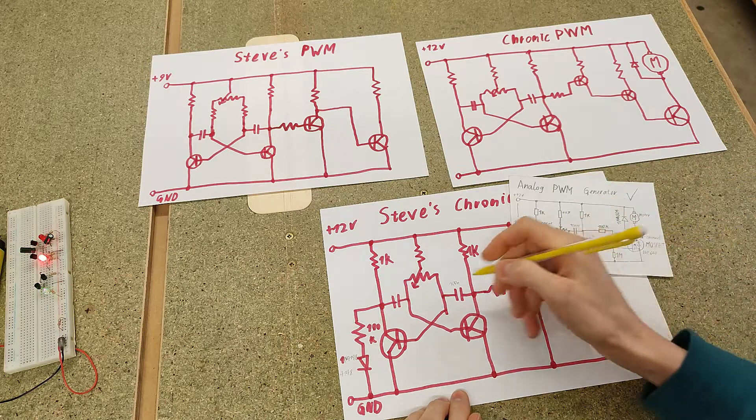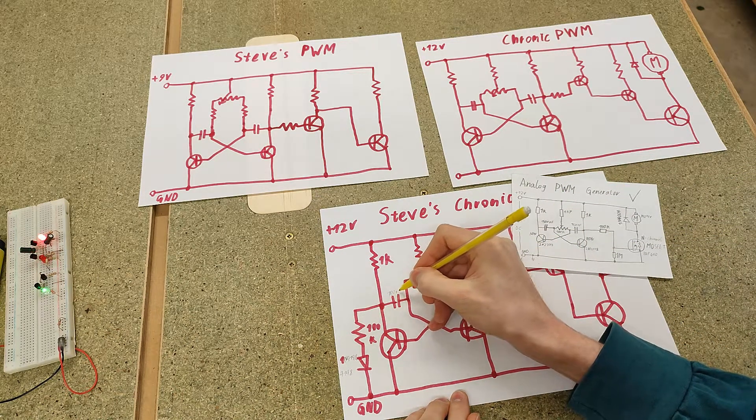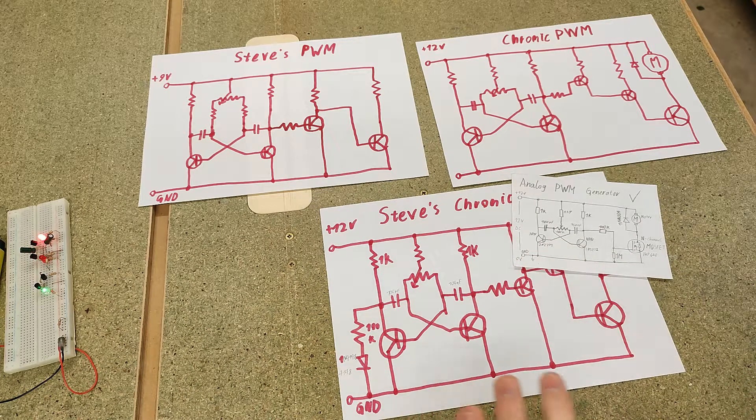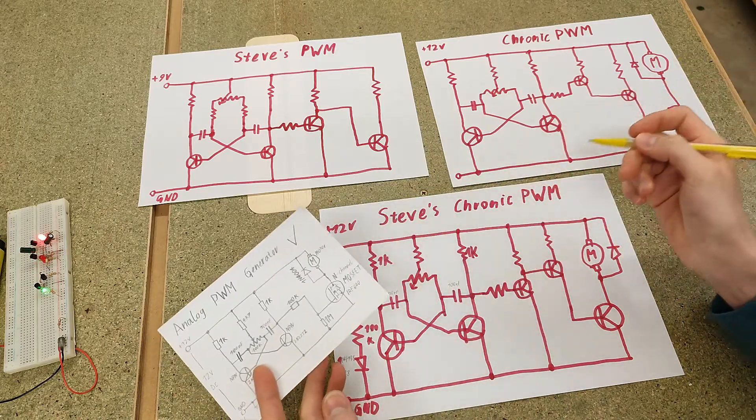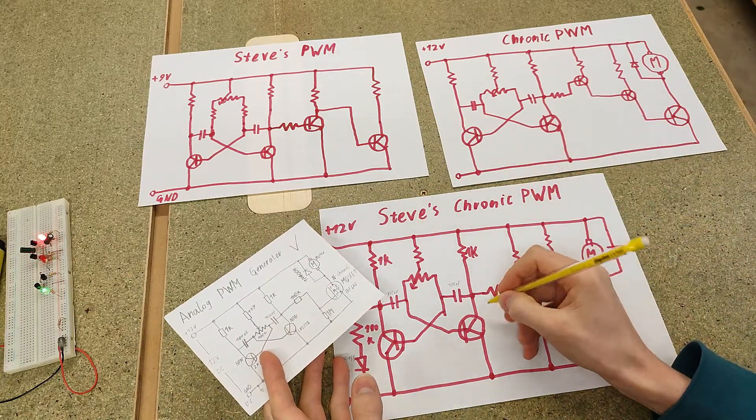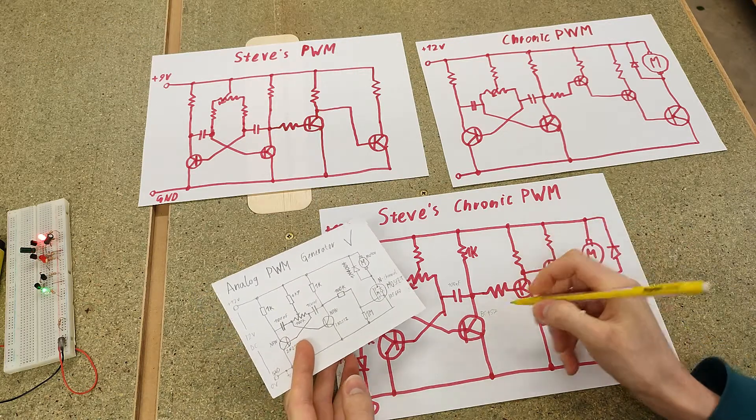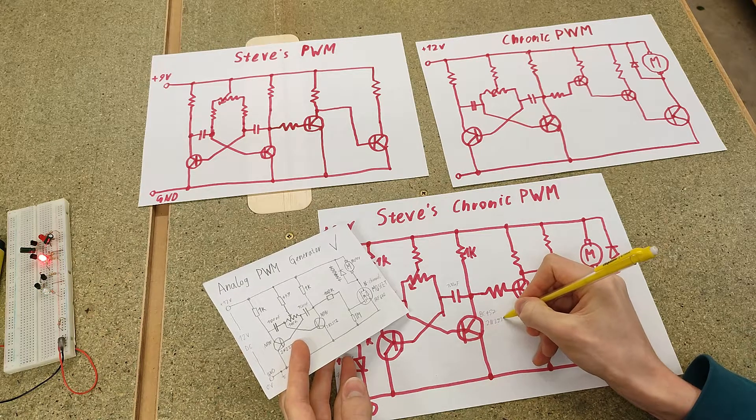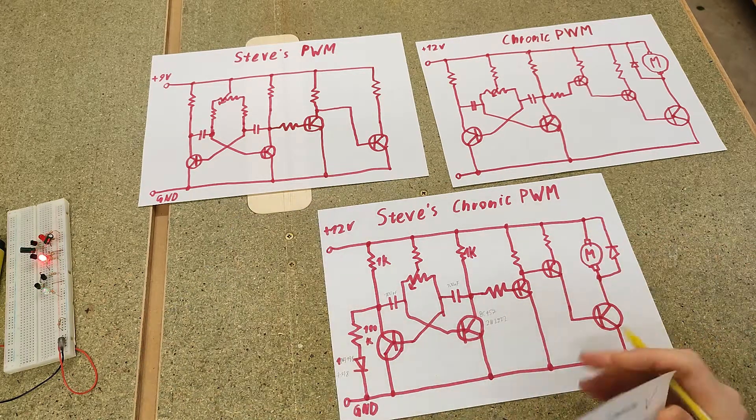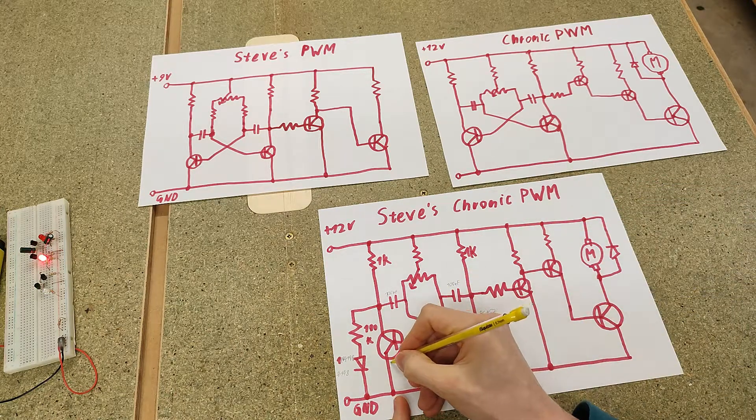The transistors, well, for the transistors you can use any standard small signal transistor. I generally use the BC547, but you can also use the 2N2222 and pretty much any other kind of standard NPN transistor.